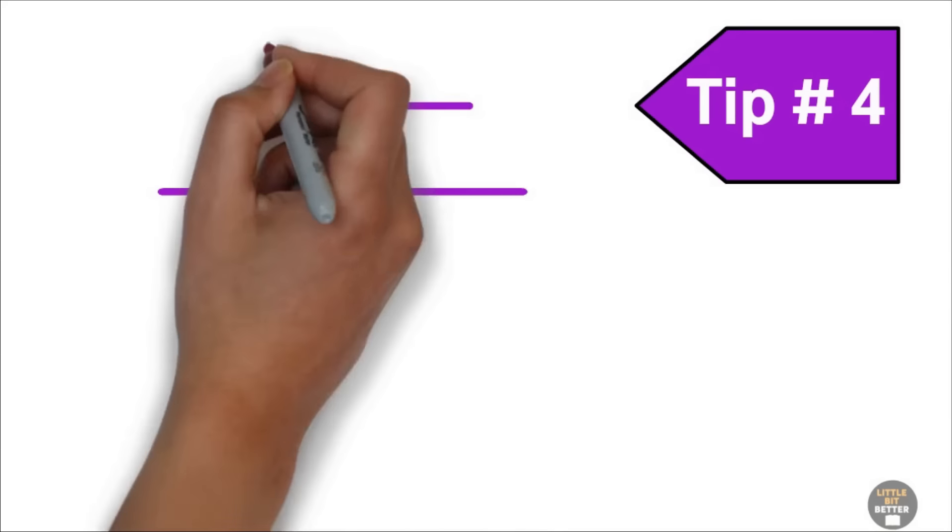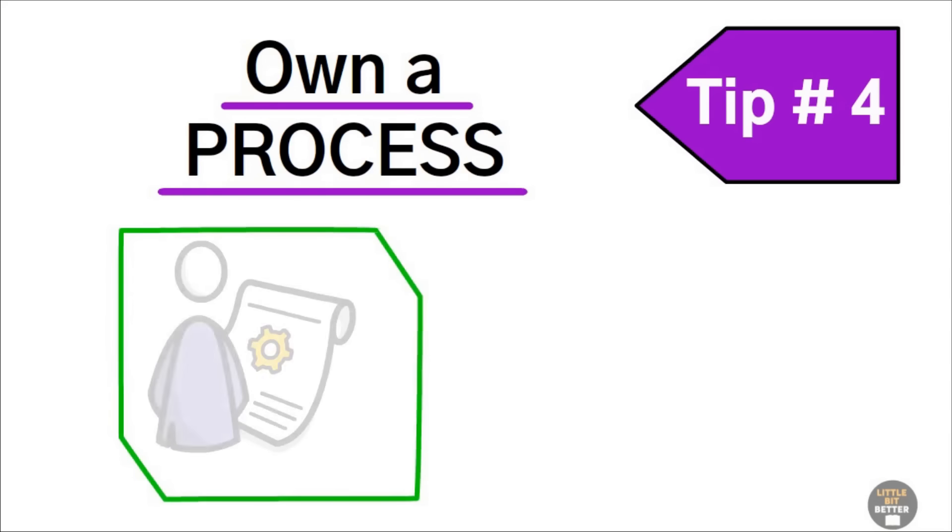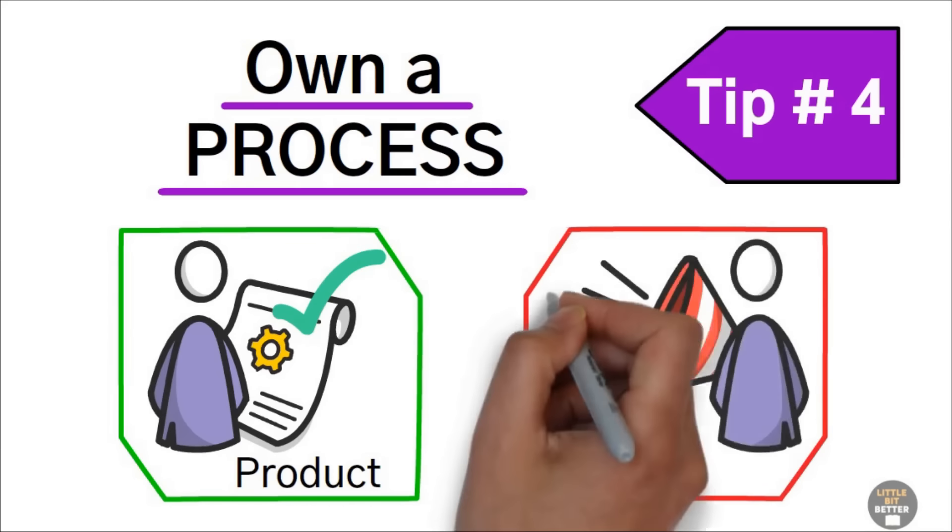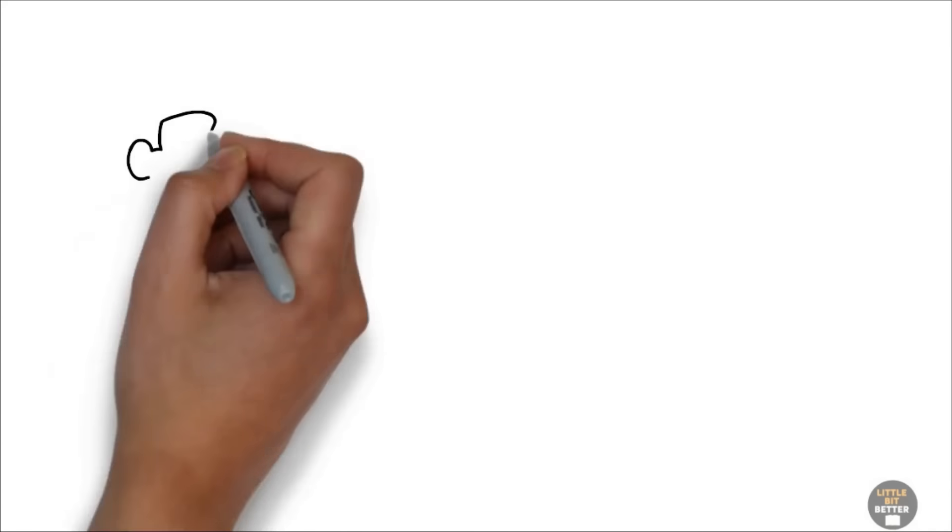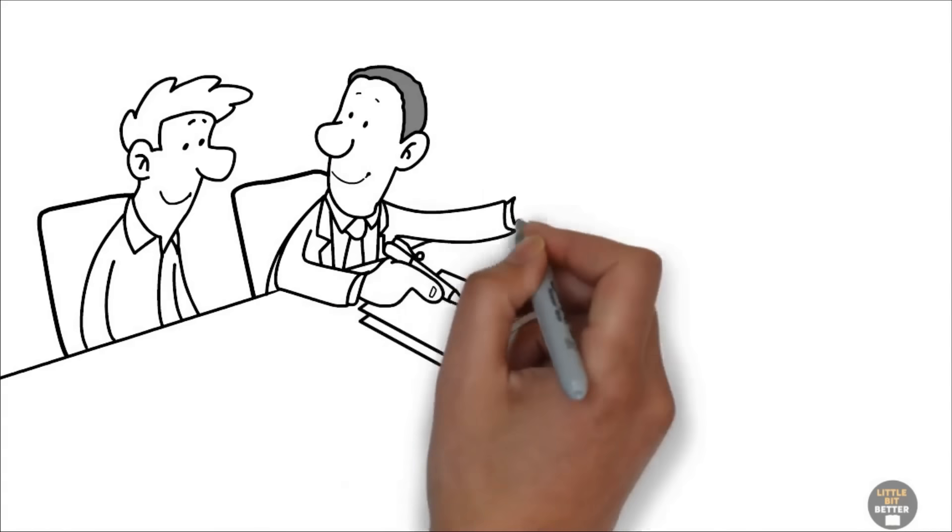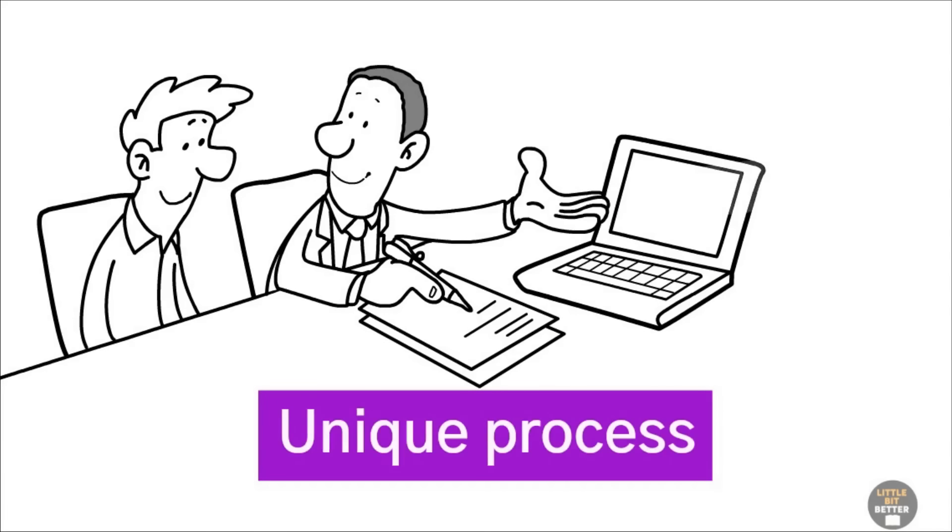Ted's tip number four, own a process. Become a product company, not a service company. Ted explains that when you own a process, you're in control. Your unique process becomes your product.